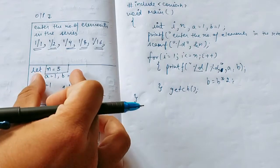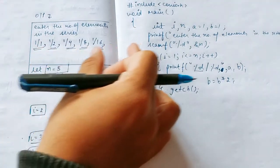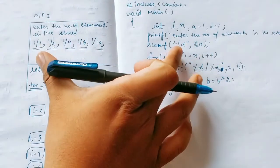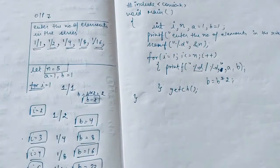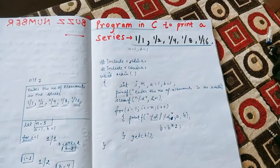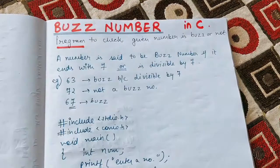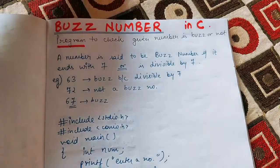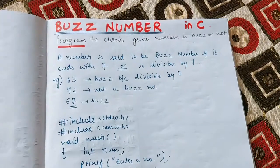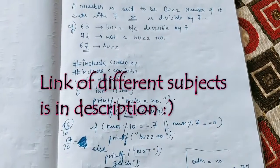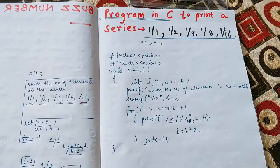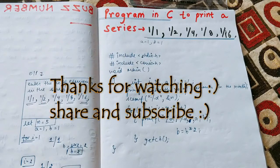The output for n equals 5 is: 1/1, 1/2, 1/4, 1/8, 1/16 — five elements. If n equals 10, you'll get ten elements like 1/32, 1/64, and so on. This was a simple program to print this particular series. In our previous video we discussed a program to check whether a number is a buzz number or not — the link is in the description. There are also various educational playlists available in the description.